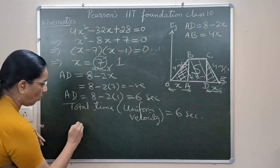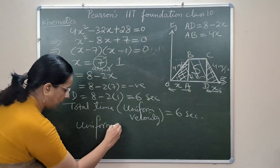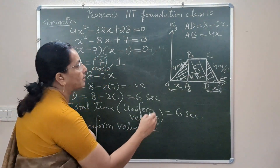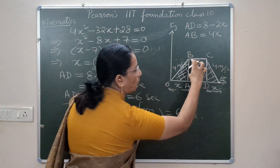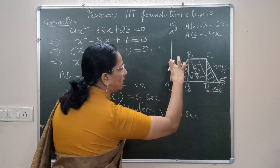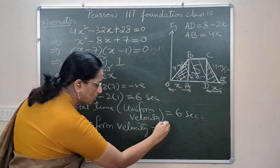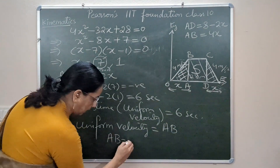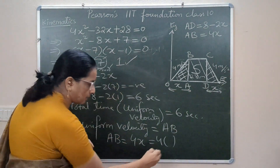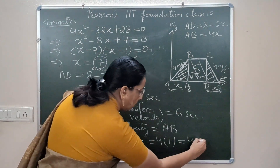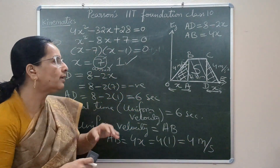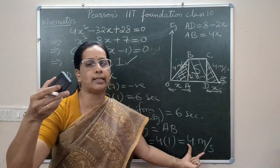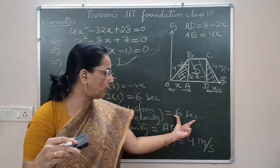Now we find the uniform velocity AB. Since AB = 4X and X = 1, the uniform velocity is 4 × 1 = 4 meters per second. So the final answers are: the lift traveled with a uniform velocity of 4 meters per second, and it maintained this velocity for a duration of 6 seconds, after accelerating for 1 second and before decelerating for 1 second.